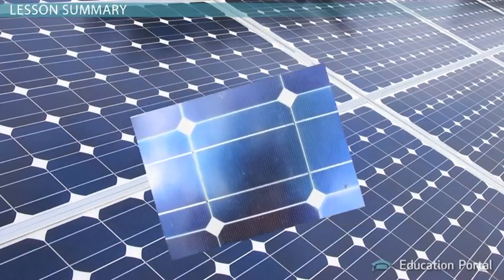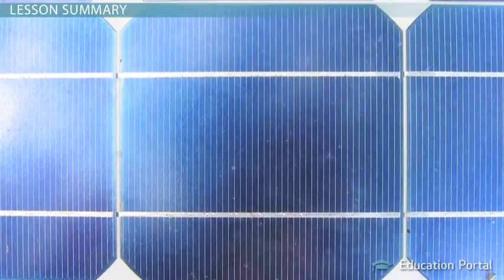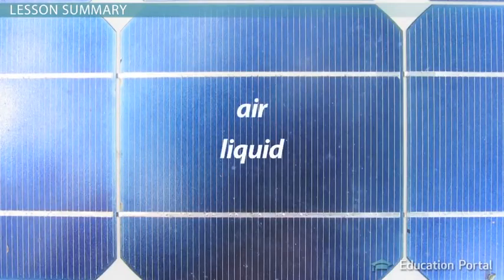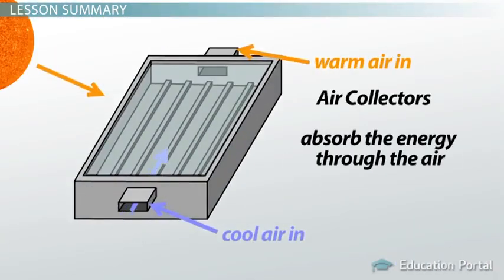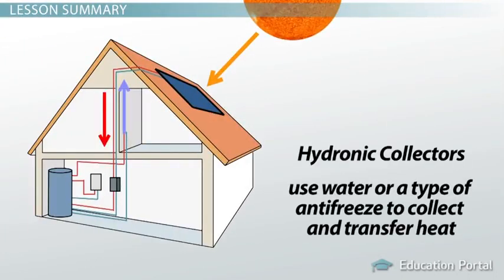Active solar heating systems use a substance to collect and transfer the heat in the solar collector. This substance is typically air or a liquid. Air-based systems absorb the energy through the air and are referred to as air collectors. Liquid-based systems use water or a type of antifreeze to collect and transfer heat and are referred to as hydronic collectors.